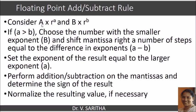Consider a number represented as A into r power a, where A is the mantissa part, r is the radix, and a is the exponent. The second number is represented as B into r power b, where B is the mantissa, r is the radix, and small b is the exponent.